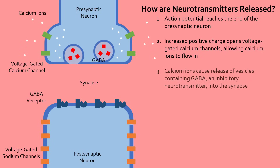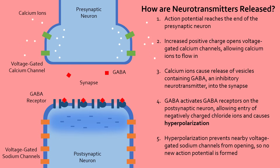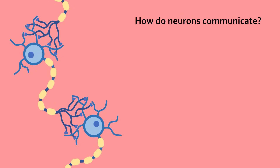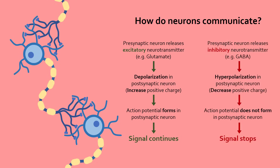If the neurotransmitter released is instead inhibitory, like GABA, it binds to postsynaptic receptors that activate chloride channels. Chloride, a negatively charged ion, will flow in, making the inside of the cell more negatively charged. This process is called hyperpolarization, and the negative charge makes it difficult to activate the voltage-gated sodium channels, which open when there is positive charge. Therefore, the action potential does not form and the signal is no longer continued. Essentially, in order for an action potential to form in the postsynaptic neuron to continue the signal, it needs to depolarize and become more positively charged inside. If it hyperpolarizes, it becomes more difficult for an action potential to form, and no signal is produced.